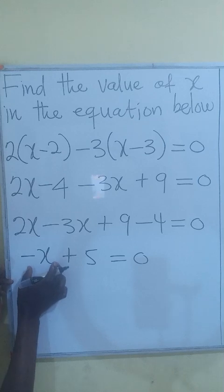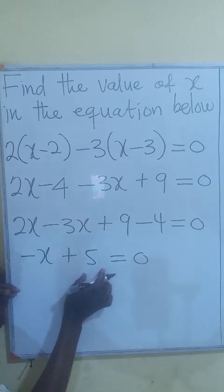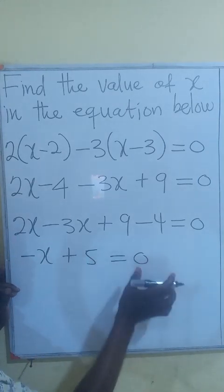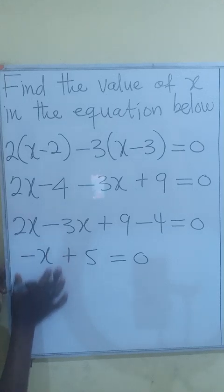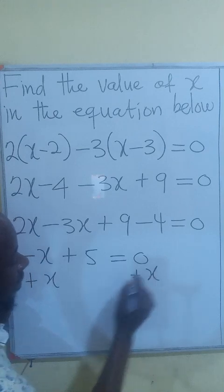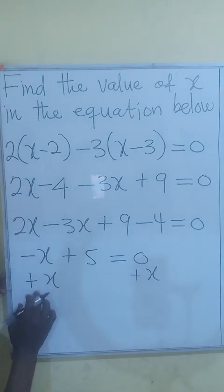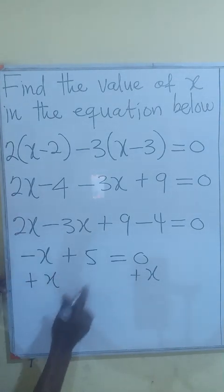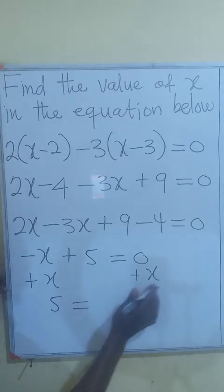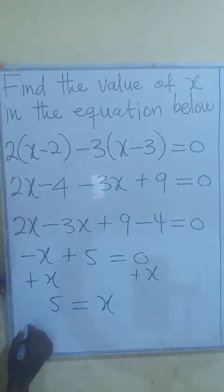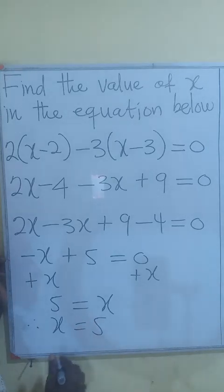We are looking for the x. So either we maintain the x here and subtract 5 from both sides. Or we add x to both sides. So plus x plus x. So negative x plus x will give 0. So we are left with only 5 equals to x. Therefore, the value of x is 5.